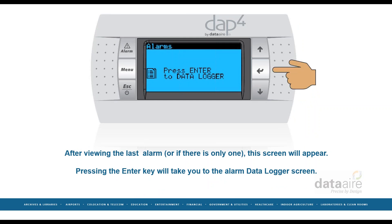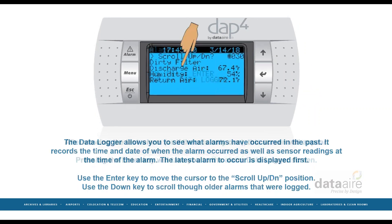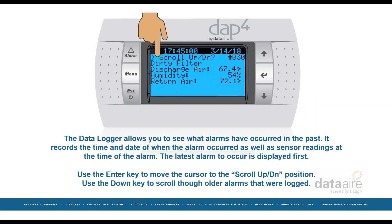Pressing the enter key will take you to the alarm data logger screen. The data logger allows you to see what alarms have occurred in the past. It records the time and date of when the alarm occurred as well as sensor readings at the time of the alarm. The latest alarm to occur is displayed first.